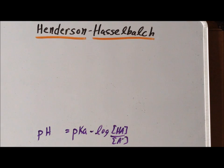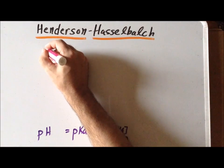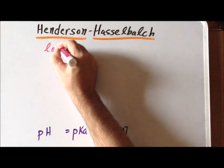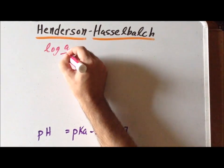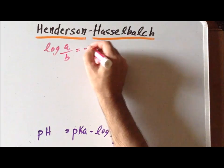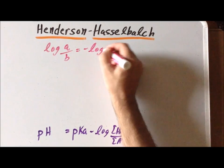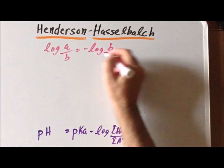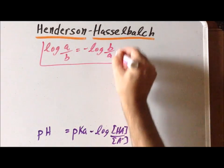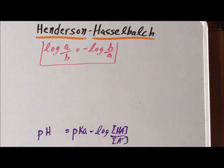We now want to use one more property of logarithms, which is that the log of A divided by B is equal to the negative log of B over A.